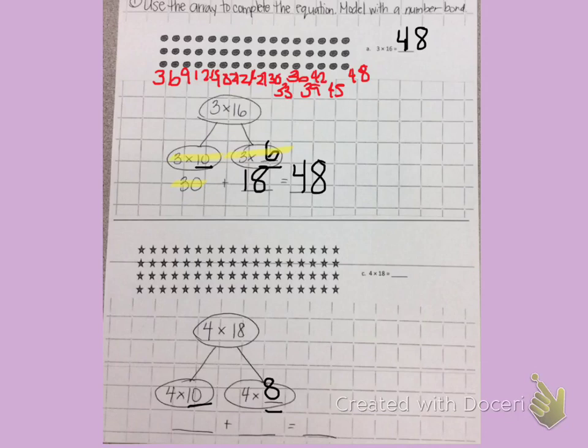4 times 10 is 40. 4 times 8, I'm going to count by 4's: 4, 8, 12, 16, 20, 24, 28, 32.